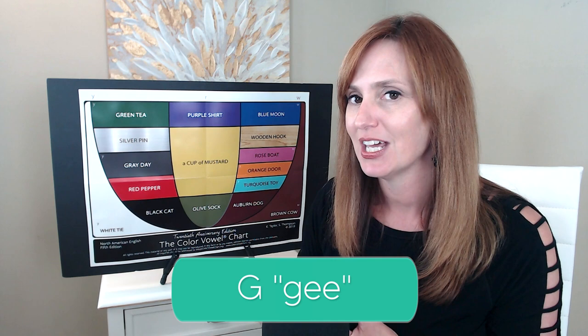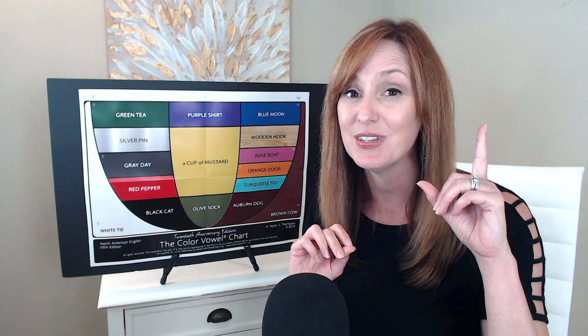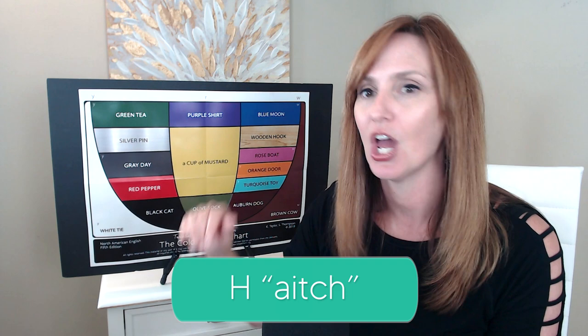For G, we begin with the J, soft G consonant. This one is tricky for many — J. And if you have trouble with this sound, I have a whole other lesson to help you with that, and you can click on it here. G. Then releasing into the green T, E vowel. G. H. Gray day H.